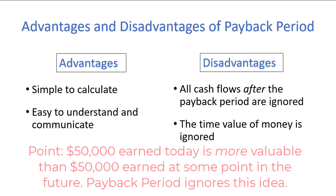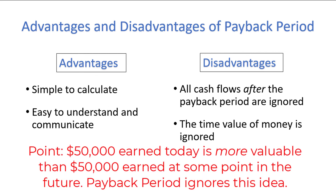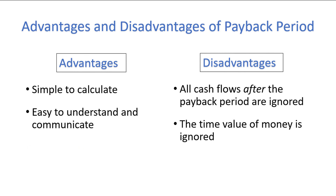Of course, we know $50,000 earned today is worth much more than $50,000 in 5 years, because that's 5 years where the $50,000 could be invested into other projects or investments that presumably earn some amount of return. That wraps up our video on the payback period. Join us in the next video, where we will discuss the next capital budgeting method, net present value.